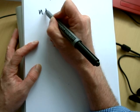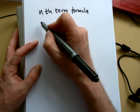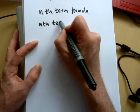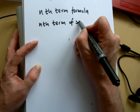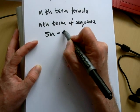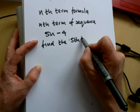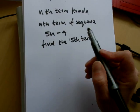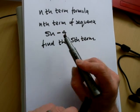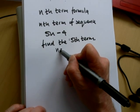Now we may get some substitution into the nth term formulas, so we'll do that next. So we might be told that the nth term of a sequence is 5n minus 4, and we're asked to find the fifth term. In an nth term formula, n stands for the term in the sequence. So if we're asked to find the fifth term, then we use n equals 5.